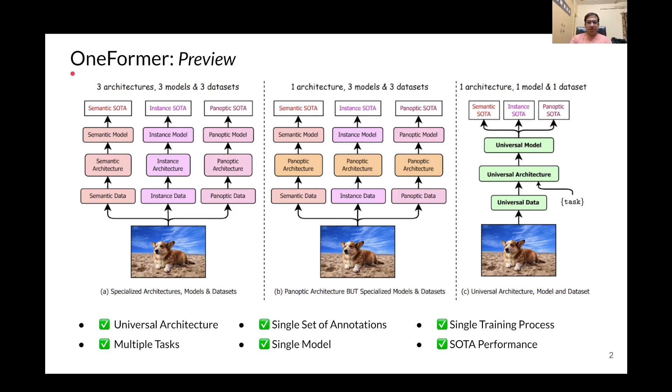As compared to previous methods, which needed to be trained individually on each of the three tasks to achieve the corresponding state-of-the-art performance, our OneFormer is able to reduce the training effort, storage efforts, and design effort by a factor of three with its universal architecture, universal model, and a single training process.